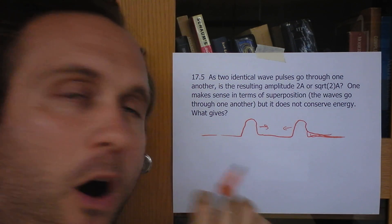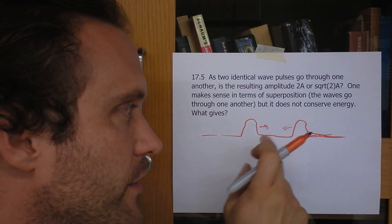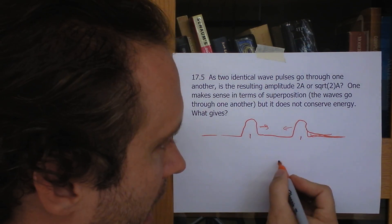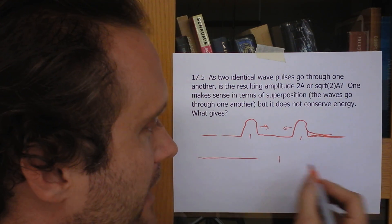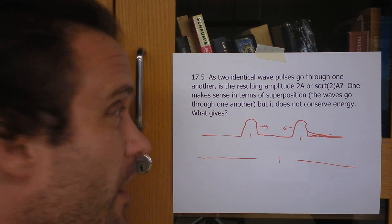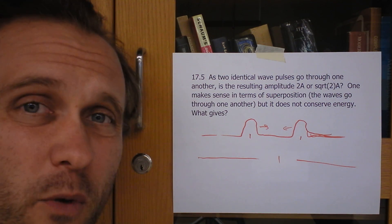And I want to know how high the resulting pulse is when the center of this one is the same location as the center of that one. That'll probably happen right in the middle right there. And so something's going on here. I just need to know if it's 2 times the amplitude of one of them or square root 2 times the amplitude of one of them.